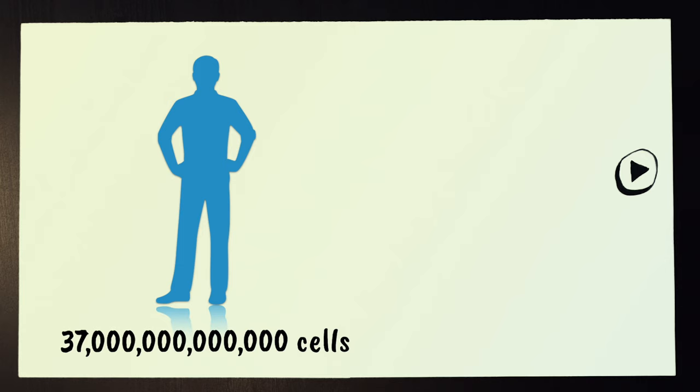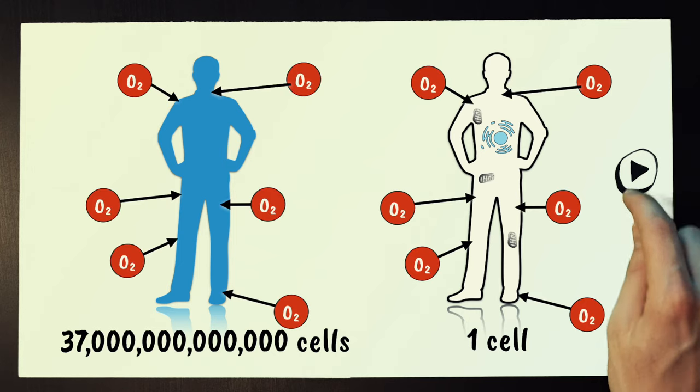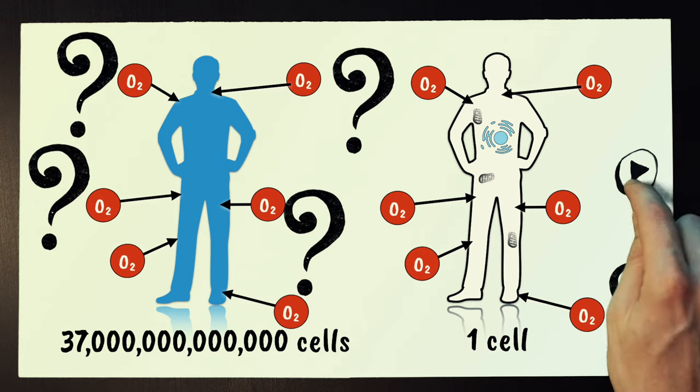But why are larger organisms made of many cells rather than a single giant cell? And why do we need such advanced transport systems rather than simply allowing materials like oxygen to diffuse from the air through our skin to all of our body cells? The problem is surface area.